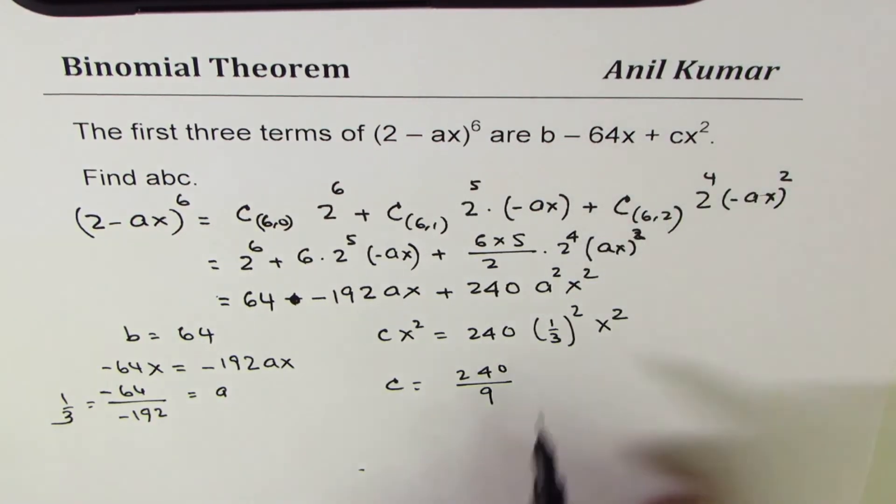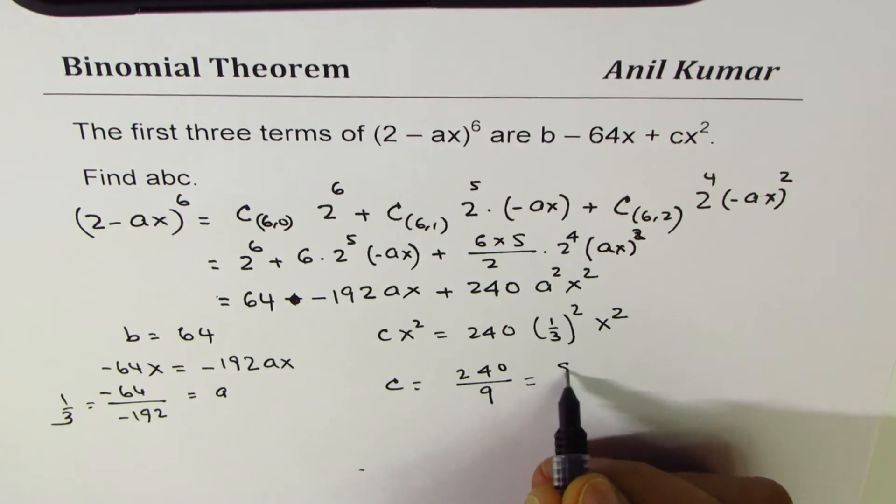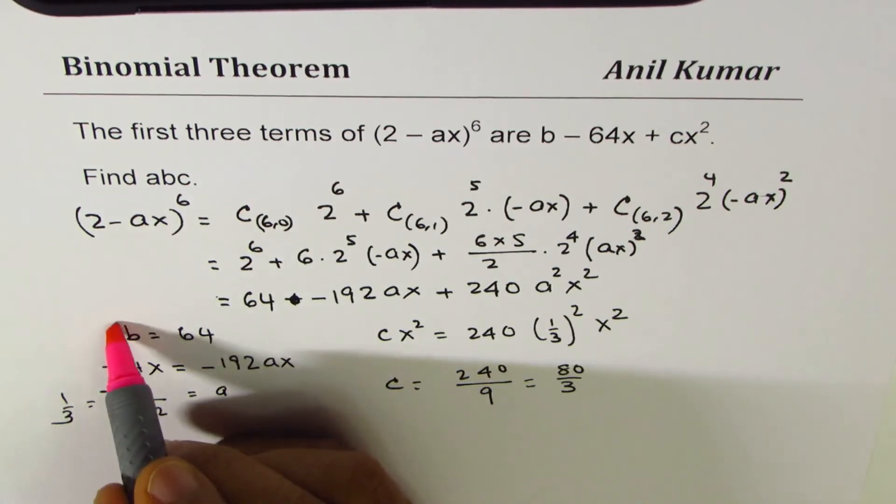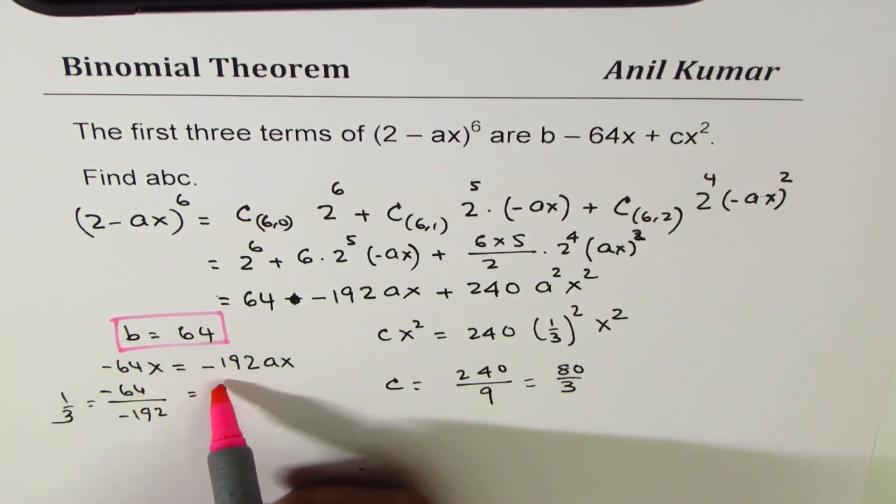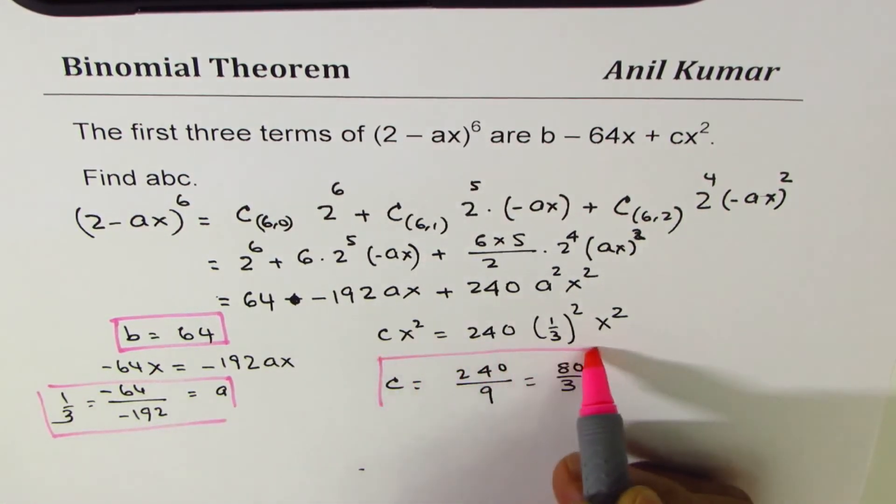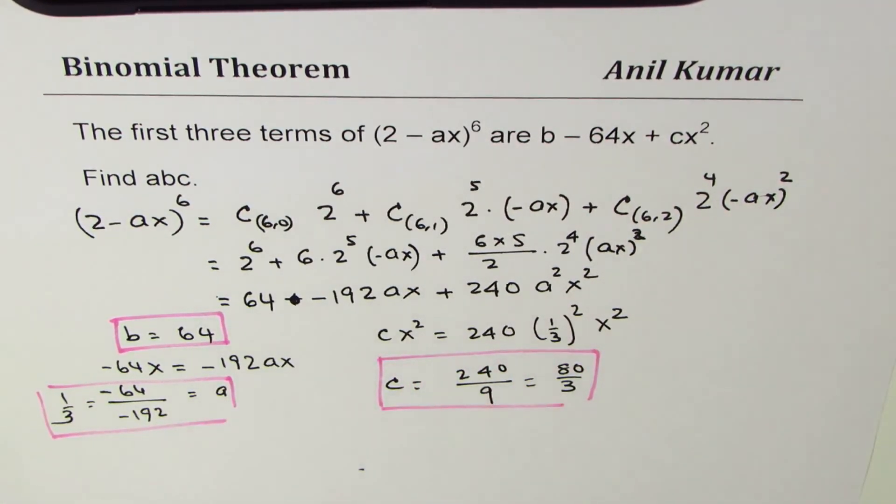x^2 cancels, we get c = 240/9 = 80/3. Dividing both by 3. So we get the three values which are required.